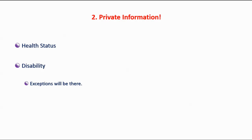Number two: private information. You don't need to specify your health status or disability in your resume unless they specifically ask for it. For example, if you are applying for a security guard job, they will ask your health status — your height, weight, running time — that is an exception. In exceptional cases you must furnish private information, but otherwise do not include health status, height, weight, or disability information in your resume.